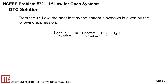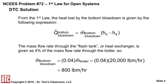From the first law, the heat loss by the bottom blowdown is given by: Q-dot equals M-dot times the difference in enthalpies, H3 minus H4. The mass flow rate through the flash tank or heat exchanger is given as 4% of the mass flow rate through the boiler. So taking 4% of the 20,000 pounds per hour gives 800 pounds per hour for the M-dot bottom blowdown.